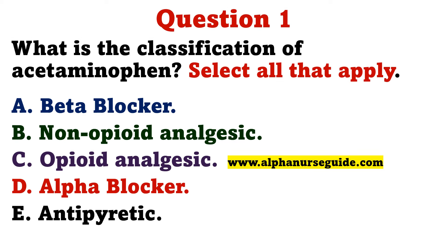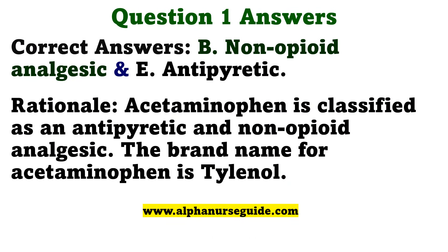Practice Question: What is the classification of acetaminophen? The correct answers are B, non-opioid analgesic, and E, antipyretic. Acetaminophen is classified as an antipyretic and non-opioid analgesic. The brand name for acetaminophen is Tylenol.